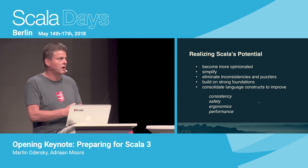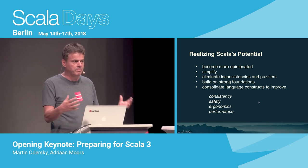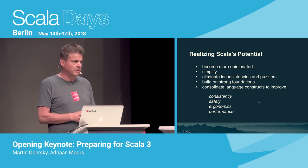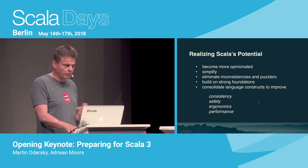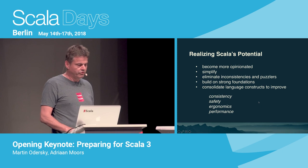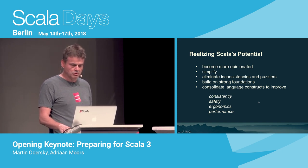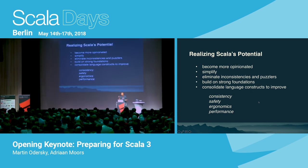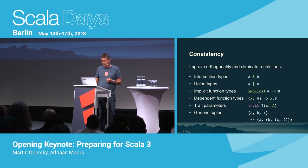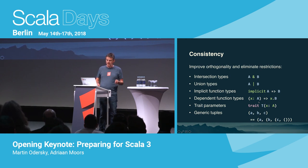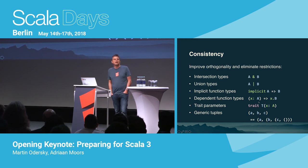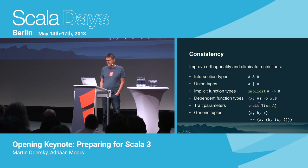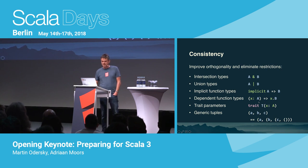Not that a language can ever be puzzler-free — that's not realistic — but we can definitely reduce them. We can build on strong foundations developed over the last years, in particular the DOT calculus for Dependent Object Types, which is an excellent guideline for type soundness. We want to consolidate language constructs to improve the language along four dimensions: more consistent, safer, better ergonomics, and more performant. I want to give a quick run-through of the features just by mentioning them under these four points.